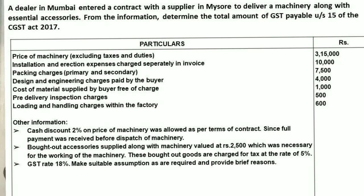Other information: a cash discount of 2% on the price of machinery was allowed as per the terms of the contract, since full payment was received before the dispatch of the machinery. Bought-out accessories supplied along with the machinery were valued at Rs. 2,500, which were necessary for working of the machinery, though these bought-out goods are chargeable at the rate of 5% GST.